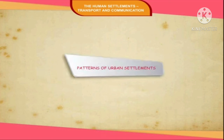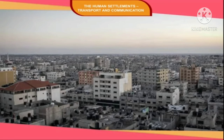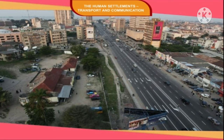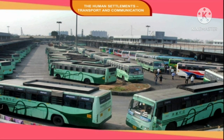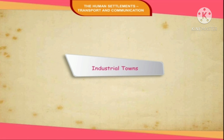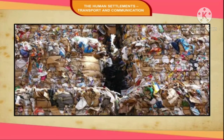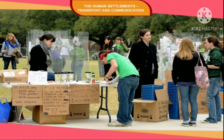Patterns of Urban Settlements: Cities are large and compact in size. They have all the amenities of life and support non-agricultural functions such as education, hospitals, industry, transport, etc. Urban centers can be classified on the basis of their functions. Industrial towns are largely concerned with the processing of raw materials into finished products. Bhilai, Ludhiana, Jamshedpur, etc. are primarily industrial towns.